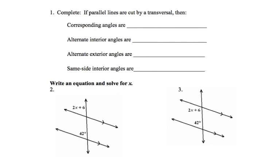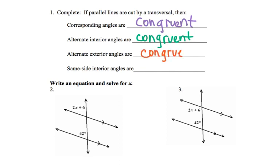If parallel lines are cut by a transversal, then corresponding angles are always congruent. Alternate interior angles will always be congruent. Alternate exterior angles will always be congruent. And same side interior angles are always going to be supplementary.